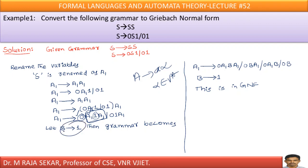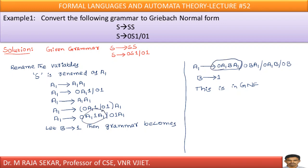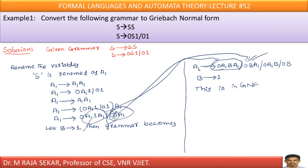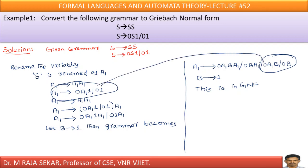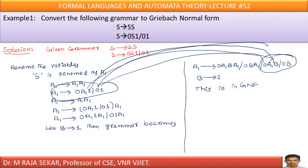How can I convert it? Let me introduce a new production: B → 1. If I introduce B → 1, then in the place of '1' in the productions, I can write B. So A1 → 0 A1 B A1, A1 → 0 B A1, and A1 → 0 B. Also the other productions: A1 → 0 A1 B and A1 → 0 B. Our newly introduced production is B → 1.